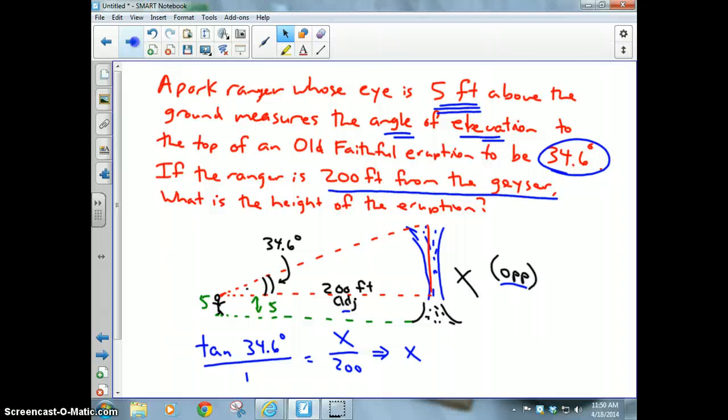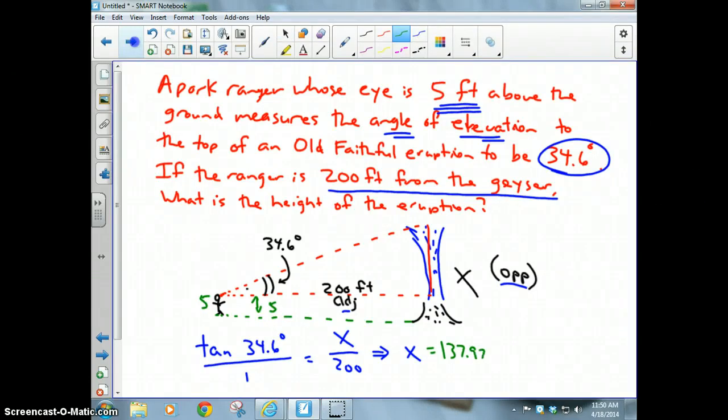However, that's from right here, my green dot, how tall it is to the bottom of my triangle. That green line distance is 137, but I want to know the height of it. Well that also includes the five feet that his eye is off the ground. I got to go all the way to the bottom, so I need to add five to this. Therefore my answer is 142.971 feet. We'll always round to three decimal places.